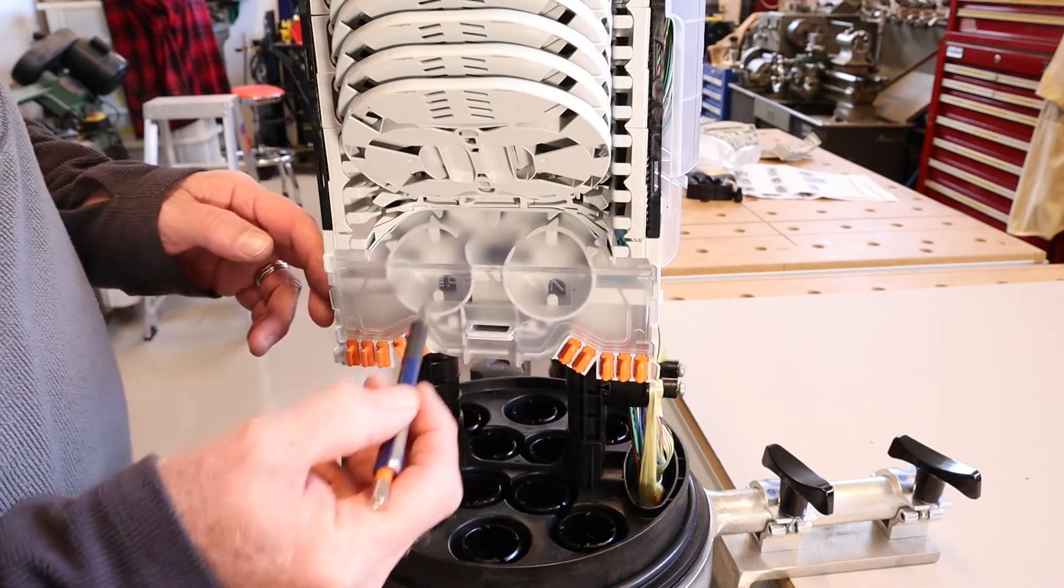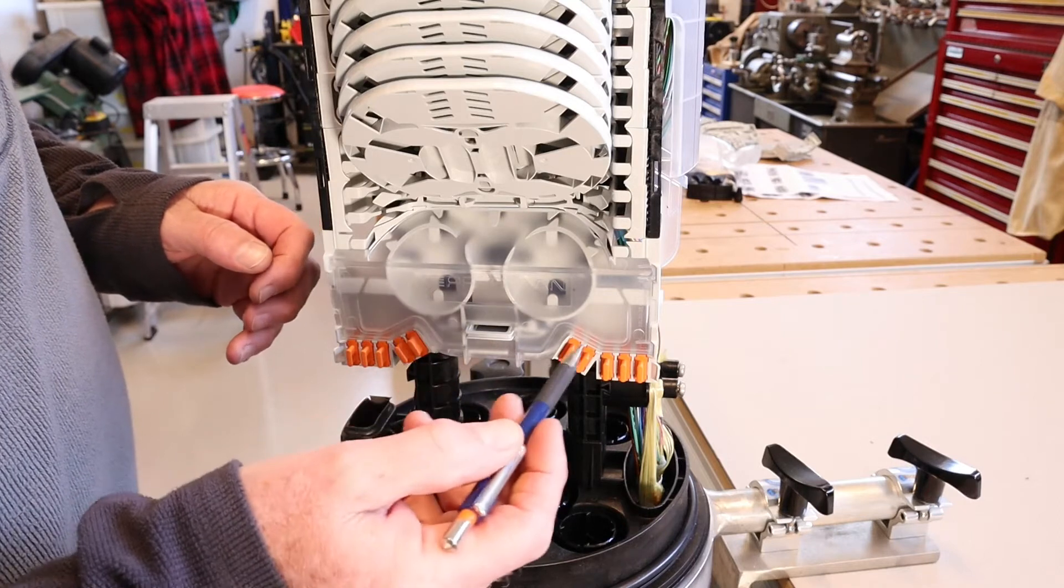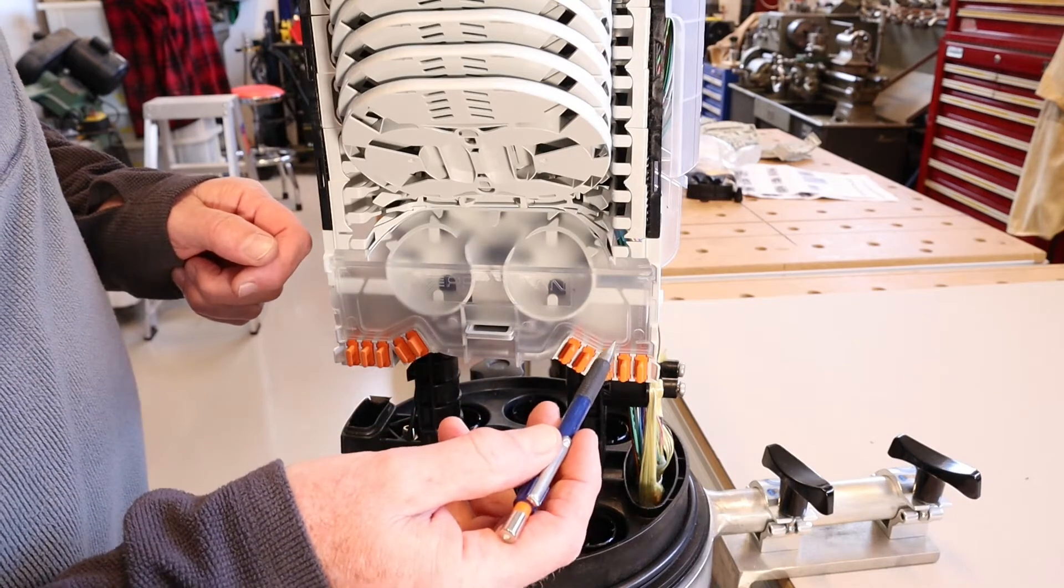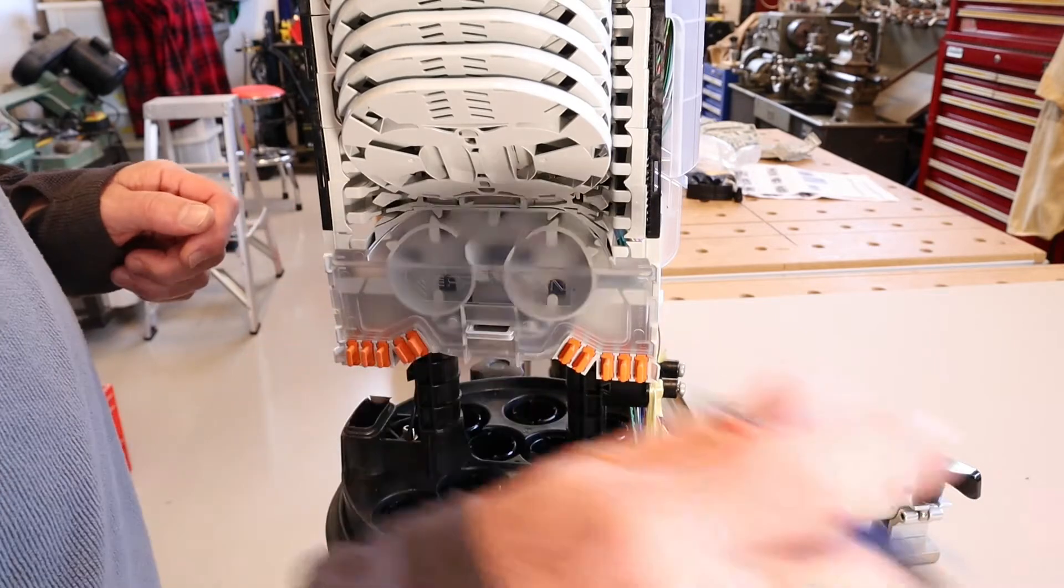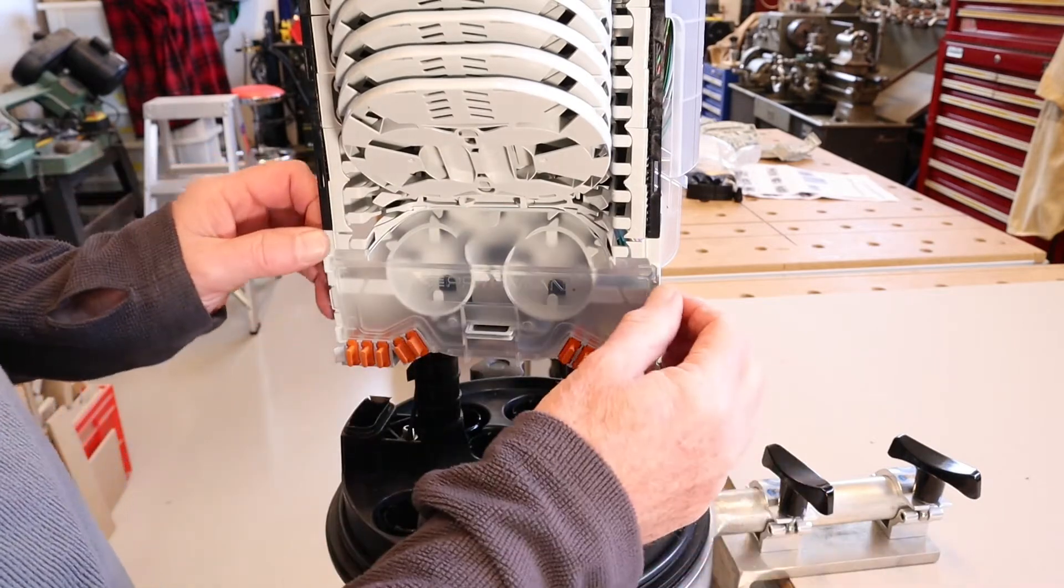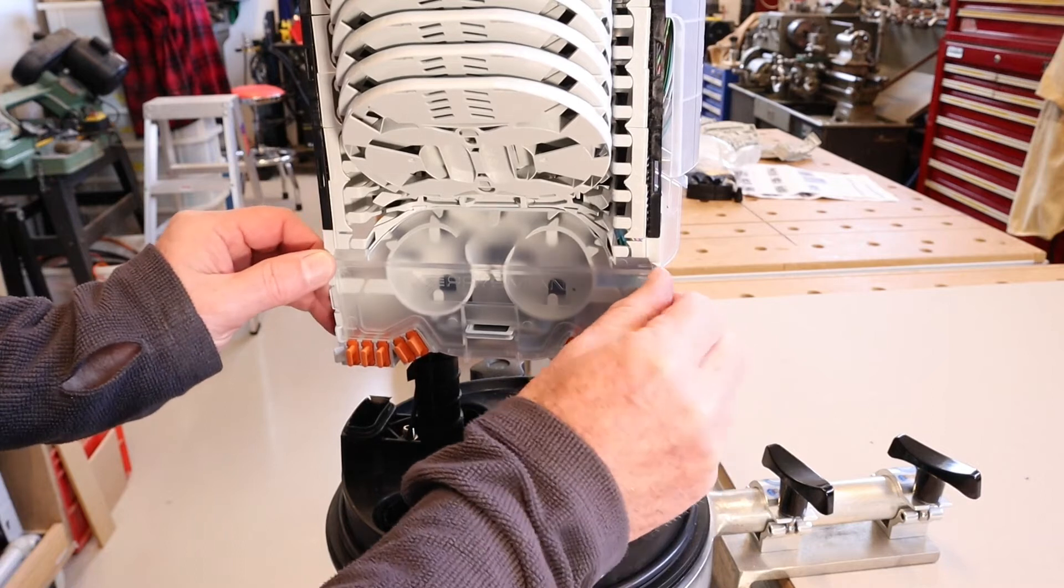So this part here is a manifold that allows you to guide the fibers in different directions. So it's got a plastic cover on it and you release the cover by just flexing the two bits of plastic here at either side.